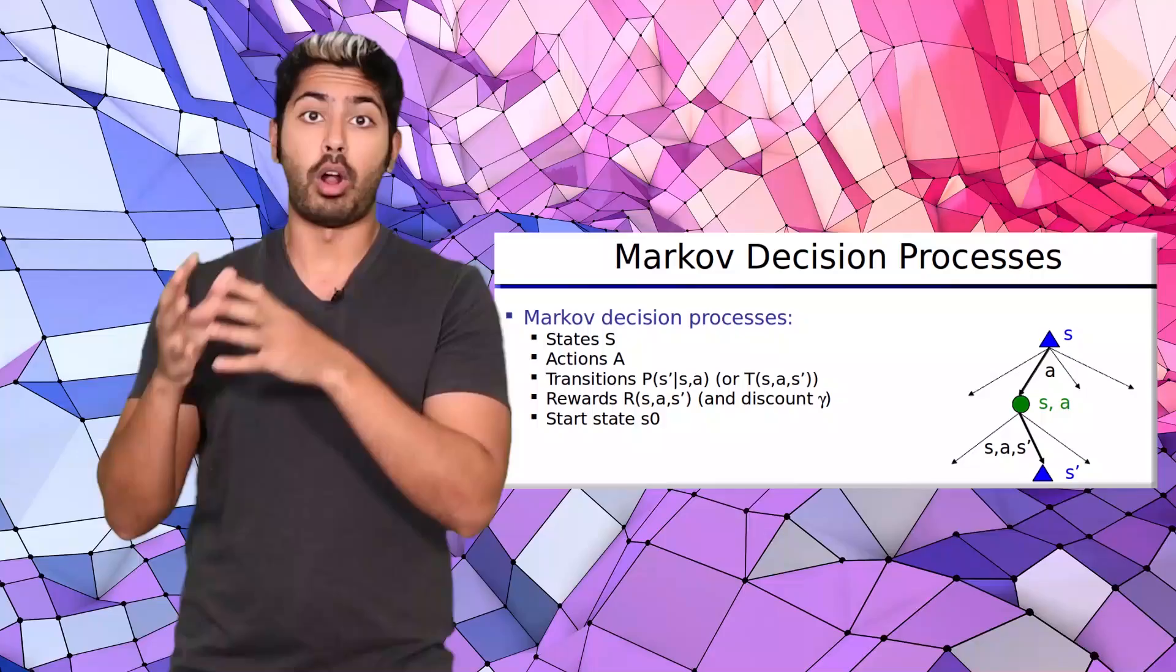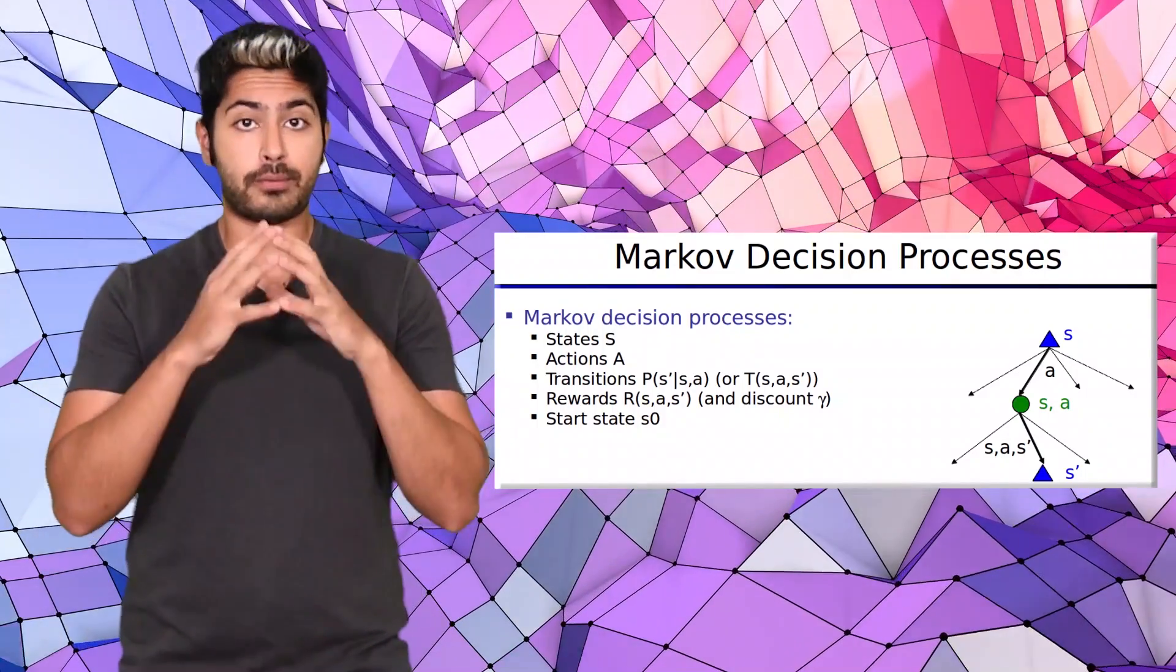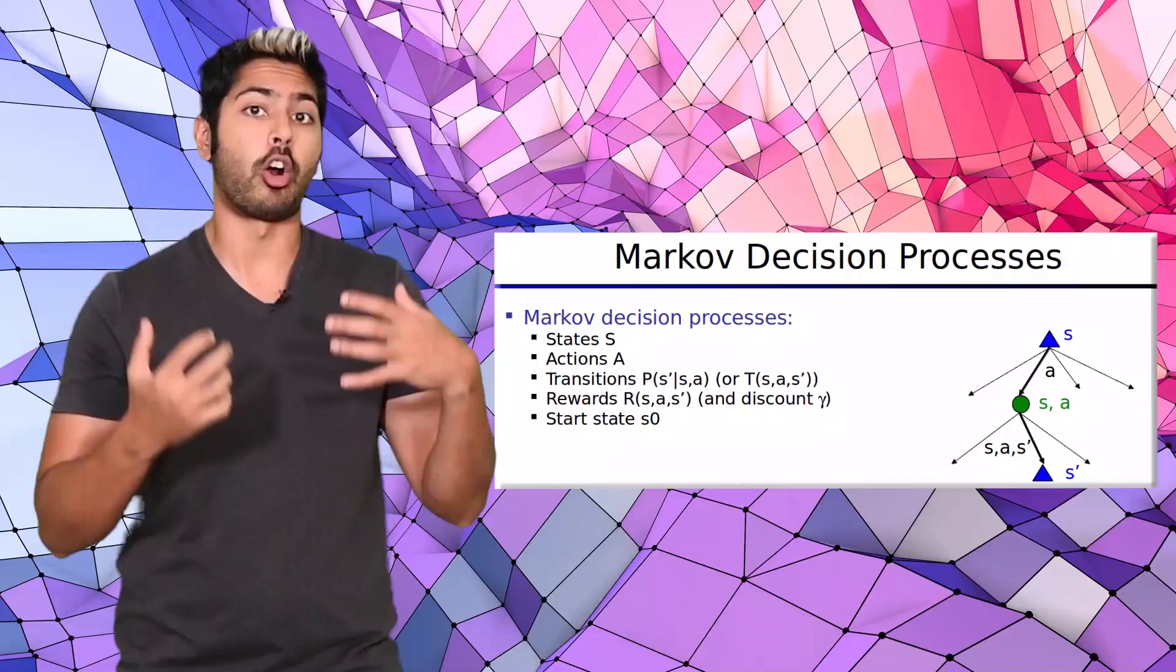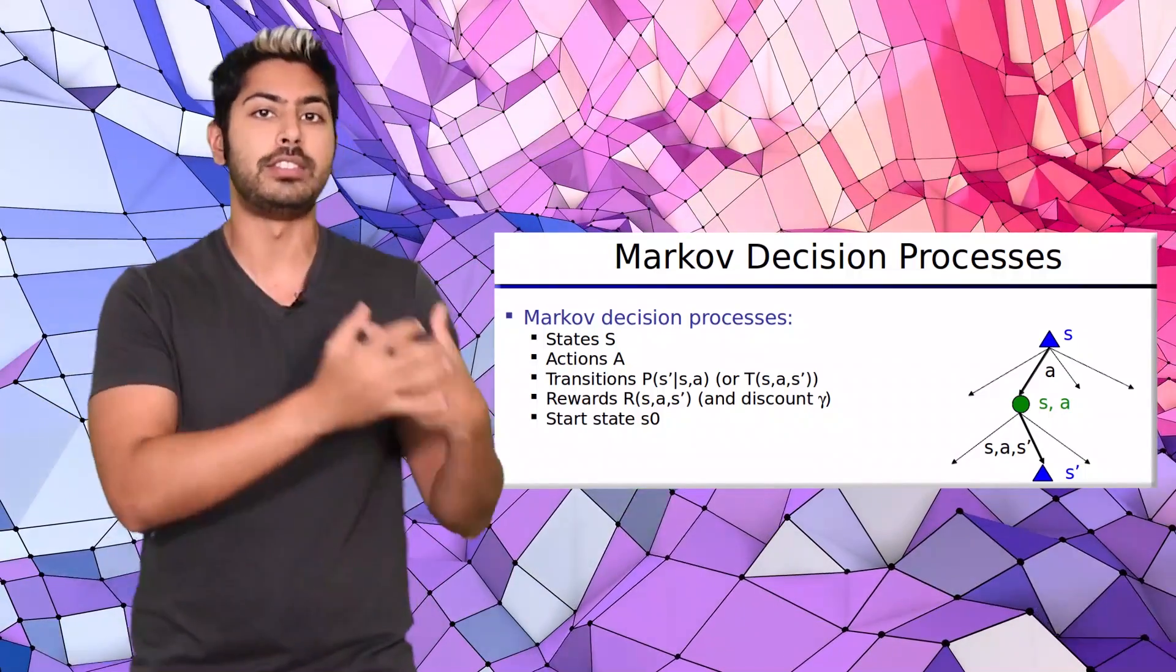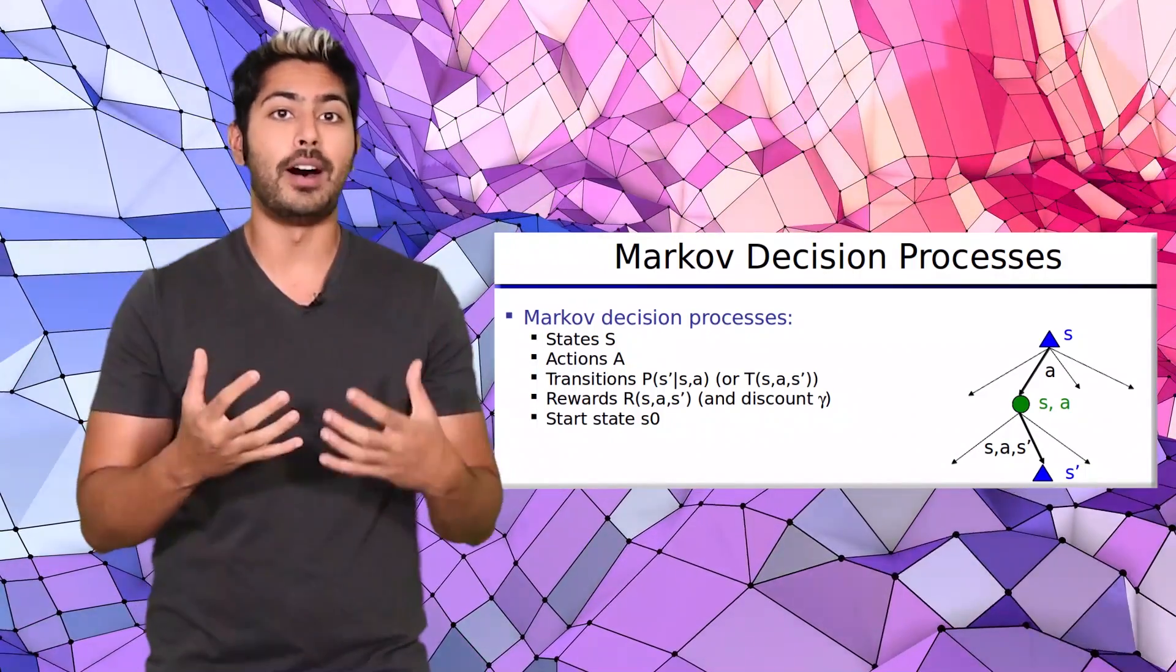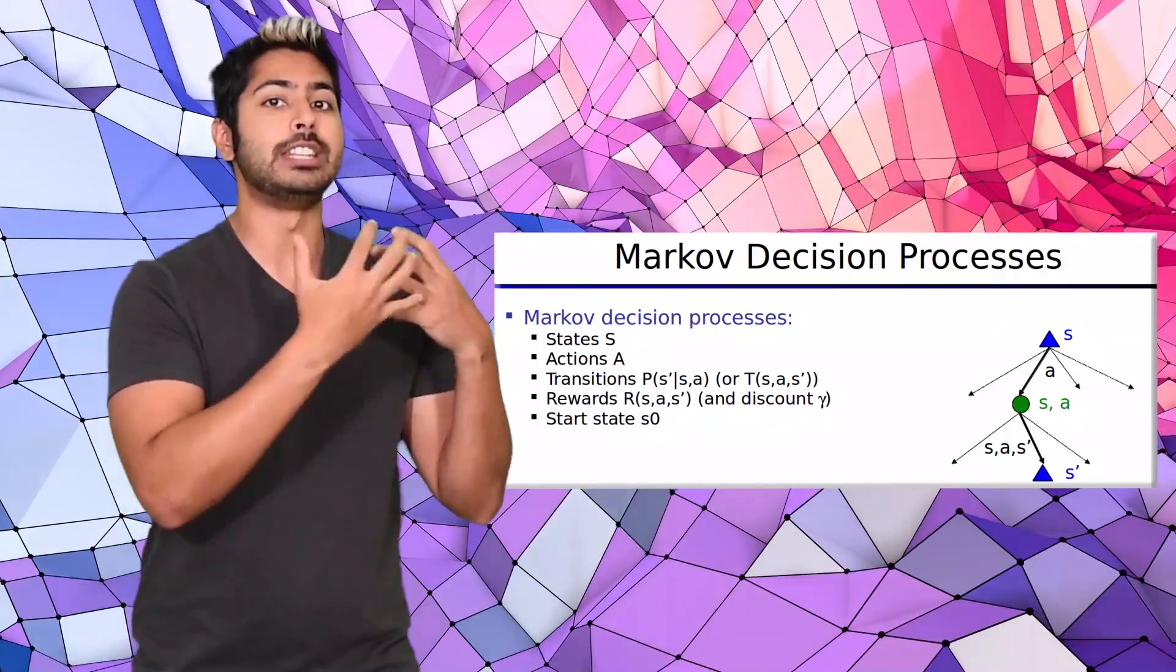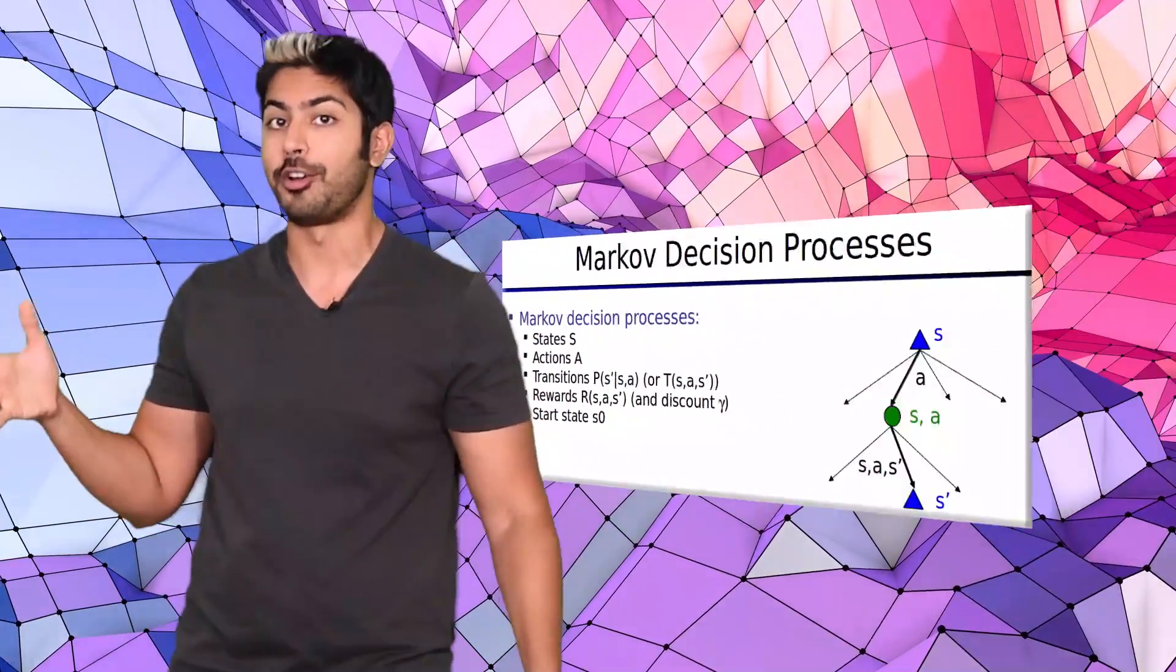The Markov decision process is the mathematical framework of choice for framing this decision problem that our AI or agent is facing. It consists of a few variables that define our environment, our agent, and how our agent interacts with this environment.